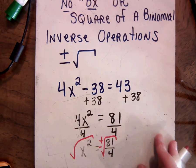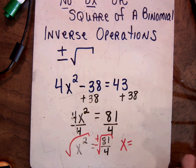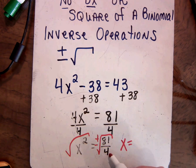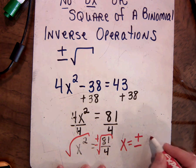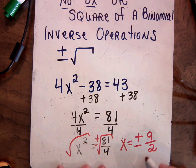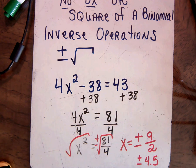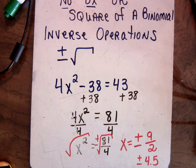And the reason that it was good not to change this to a decimal or divide it is because both of these are perfect squares, so I can very easily do this in my head. So that would give me that x equals positive or negative 9 over 2. And if you said positive or negative 4.5, that would be okay as well. Okay, so there's the first example of a problem you can see.